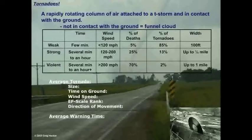If we take the tornado and break it up into three categories — weak, strong, and violent — we can look at how long they last, how fast the winds are, the percentage of deaths that come from each category, the percentage of tornadoes from each category, and finally their size.